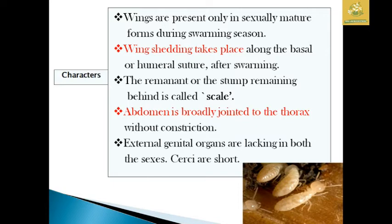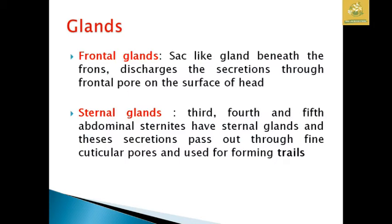The abdomen is broadly joined to the thorax without constrictions. External genital organs are lacking in both sexes, and the cerci are said to be short in these insects. They have different glands: the frontal gland, which is a sac-like gland beneath the frons, discharges secretion through the frontal pores. The sternal gland is present in the third, fourth, and fifth abdominal sternites, and secretion passes out through fine cuticular pores and is used for forming trails.